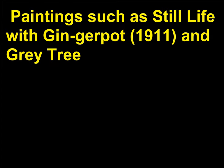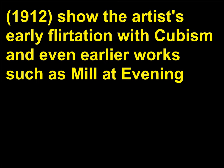During his early career, Mondrian's art was not totally abstract. Paintings such as Still Life with Gingerpot (1911) and Gray Tree (1912) show the artist's early flirtation with Cubism, and even earlier works such as Mill at Evening (1905) are linked to the Dutch landscape tradition.